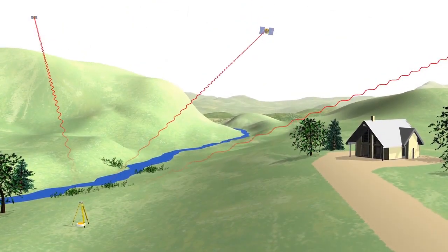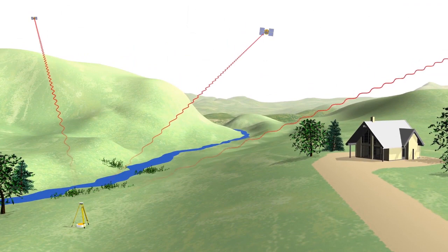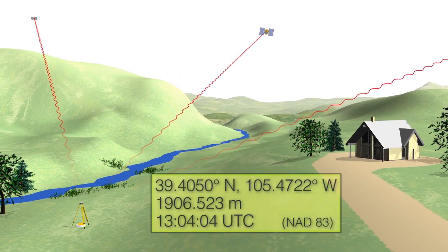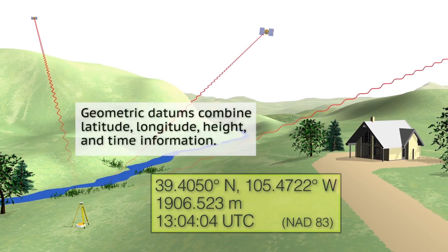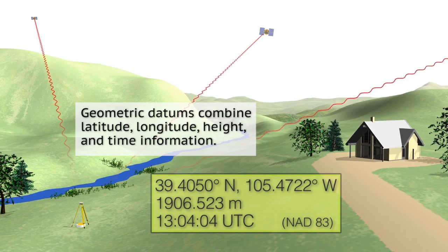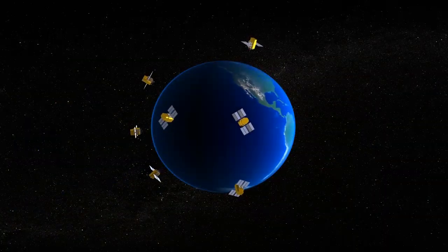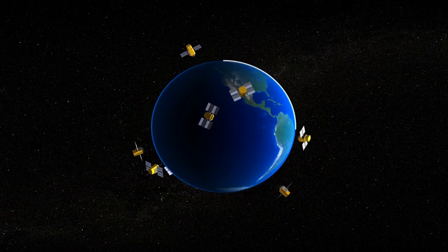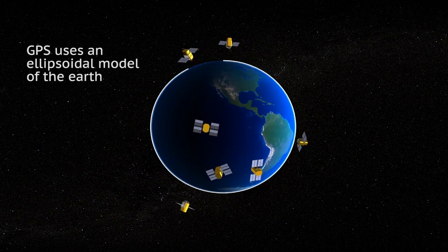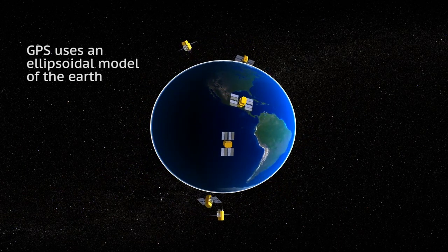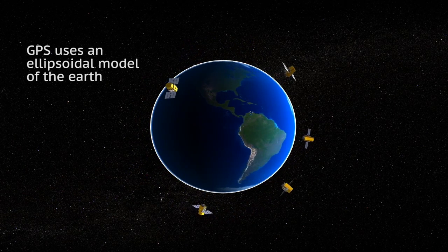Now, thanks to the Global Positioning System, commonly known as GPS, and some other space-age techniques, we are no longer limited to separate horizontal and vertical datums. Today, we have access to geometric datums which combine latitude, longitude, height, and time information. The height information derived from GPS is relative to something called an ellipsoidal model of the Earth, instead of to sea level. While there are challenges mixing old and new positioning information, overall, new technologies like GPS help to improve the accuracy of our current datums.